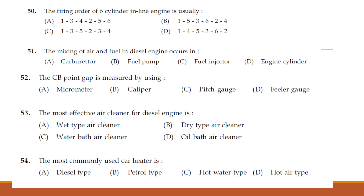The mixing of air and fuel in a diesel engine occurs in: Carburetor, fuel pump, fuel injector, or engine cylinder. The answer is option D — engine cylinder. Air and fuel mixture in a diesel engine occurs in the engine cylinder.